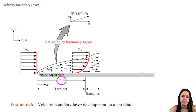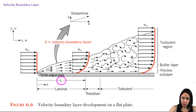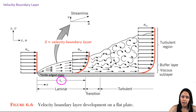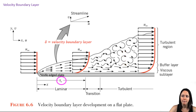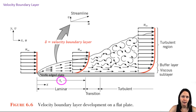That transition to turbulence doesn't occur all at once. This is the region before the flow becomes completely turbulent. And after that transition region, the flow becomes completely turbulent. That turbulent region is characterized by random mixing and no clear streamlines. There is a very thin laminar sublayer, but the majority of the flow within that boundary layer in that region is turbulent.